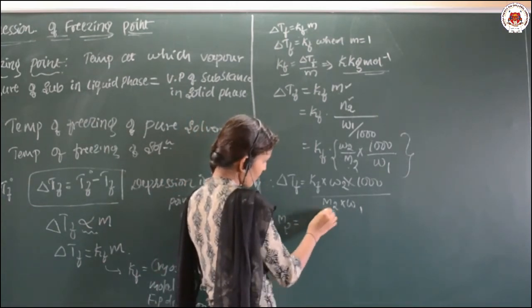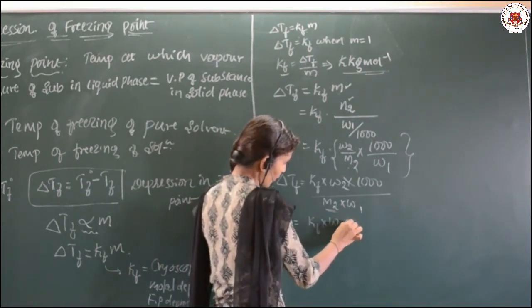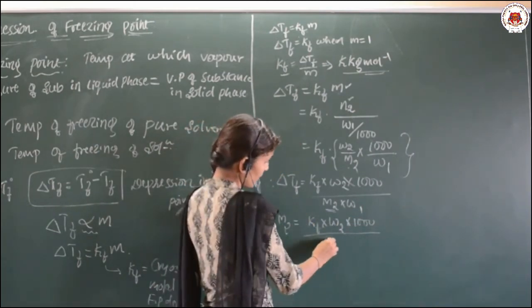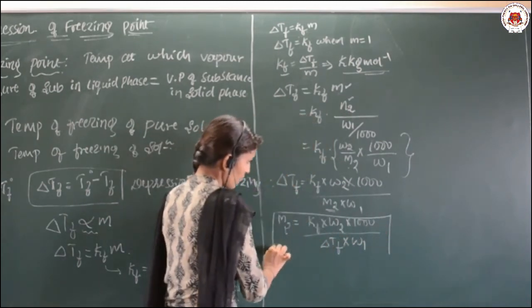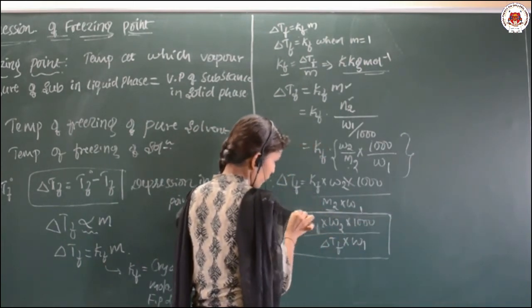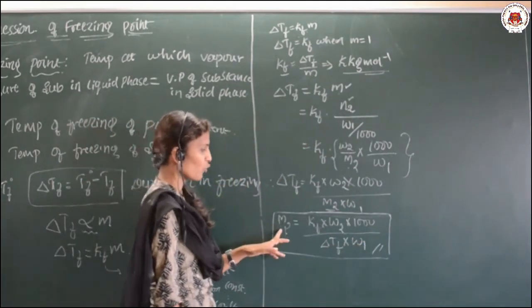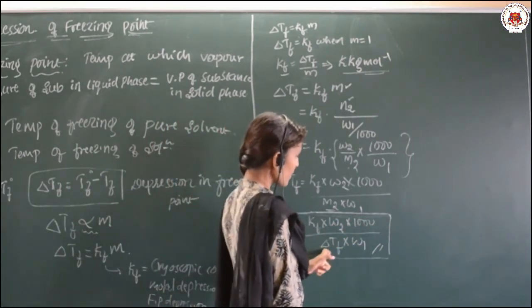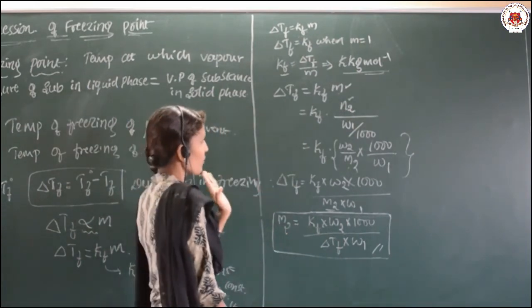In problems, you will often be asked for the molar mass. So rearranging, M₂ equals Kf × W₂ × 1000 divided by delta Tf × W₁. This is our final expression for calculating molar mass from freezing point depression data.